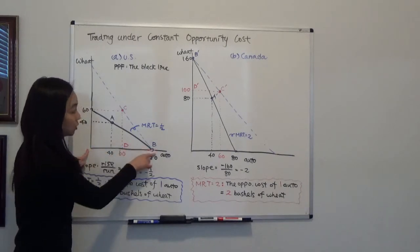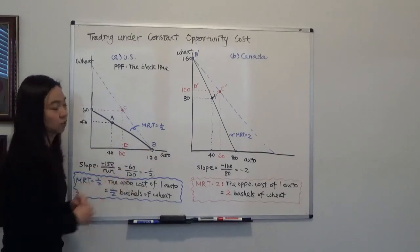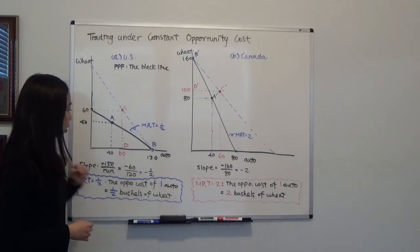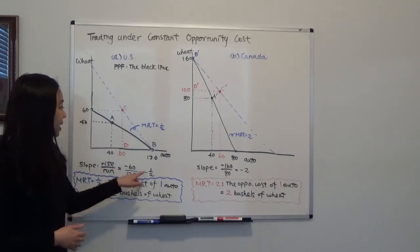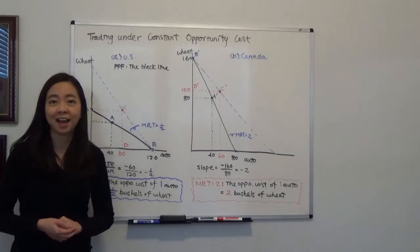and we're moving to the right, and therefore your run is 120. So the slope is negative 60 divided by 120, that gives you negative a half.